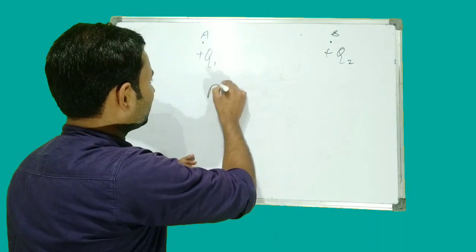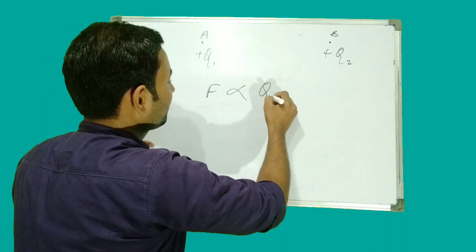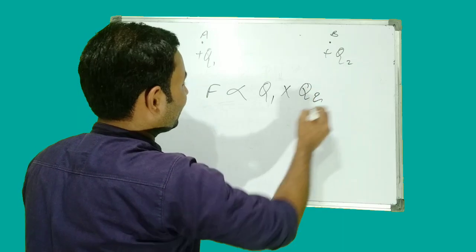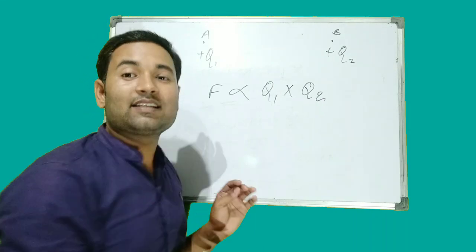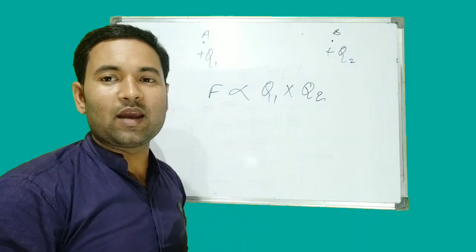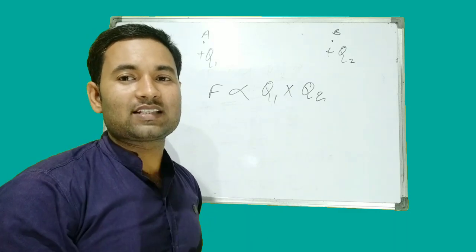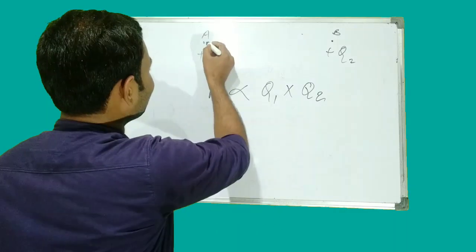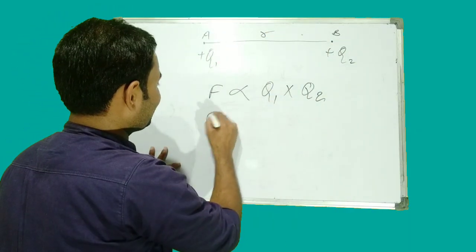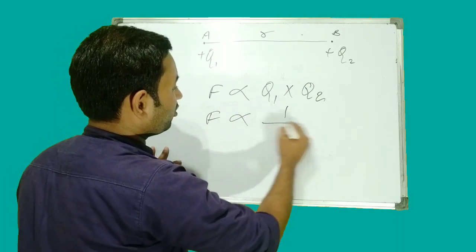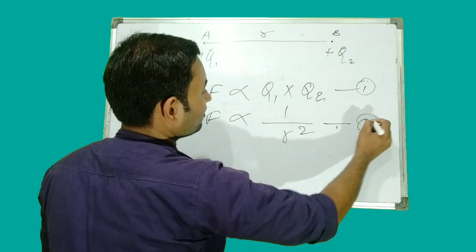Coulomb said that the force between two charges is directly proportional to Q1 multiplied by Q2. He also said that the force is inversely proportional to R squared — where R is the distance between the two charges. So force is inversely proportional to R².